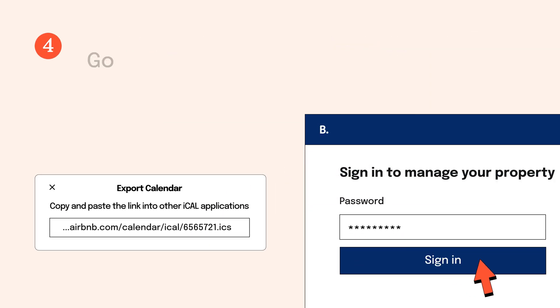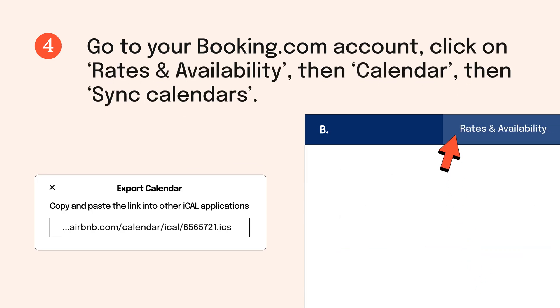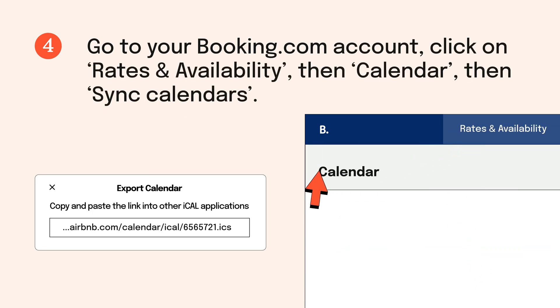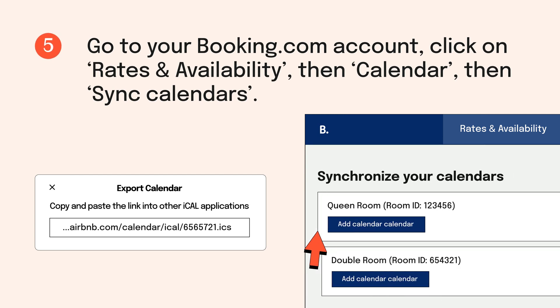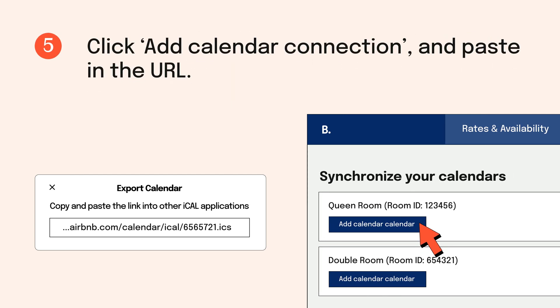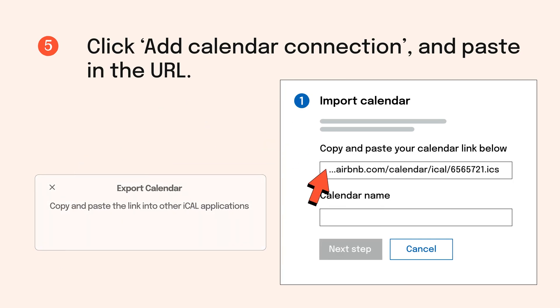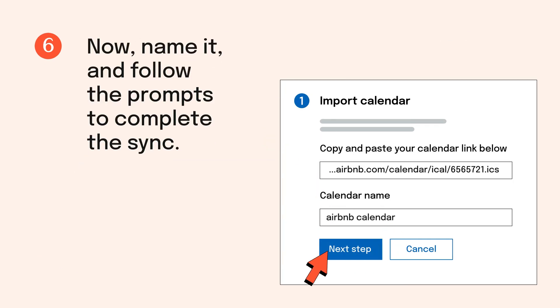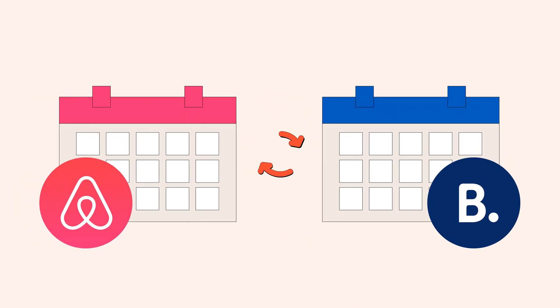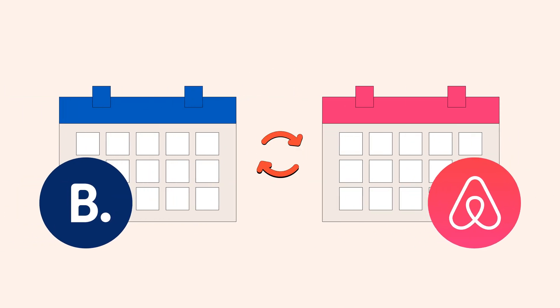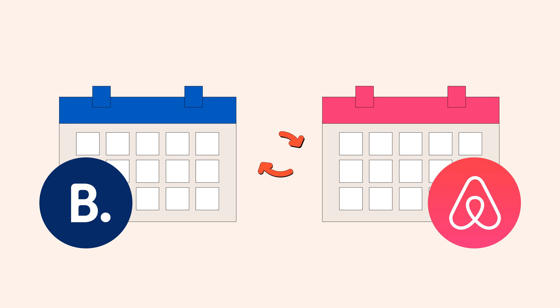4. Go to your Booking.com account, click on rates and availability, then calendar, then sync calendars. 5. Click add calendar connection and paste in the URL. 6. Name it and follow the prompts to complete the sync. Hooray! That's half of the work done. You're doing great. 7. Now you just need to do it one more time, but in reverse, so you can tell your Airbnb calendar what your Booking.com calendar looks like.